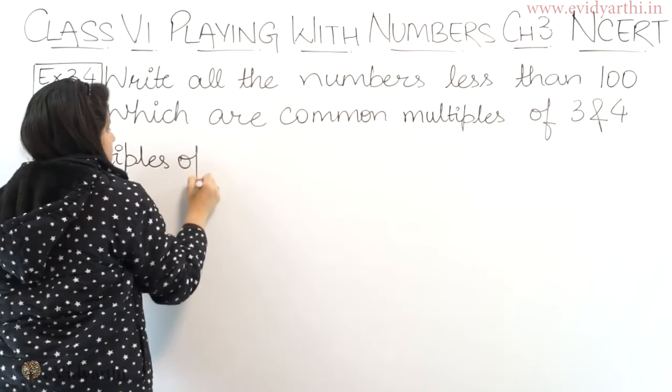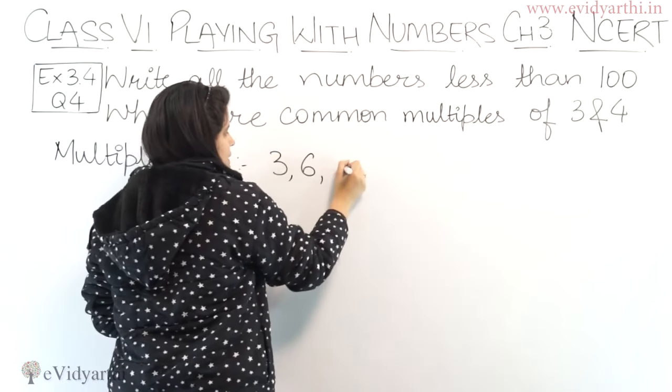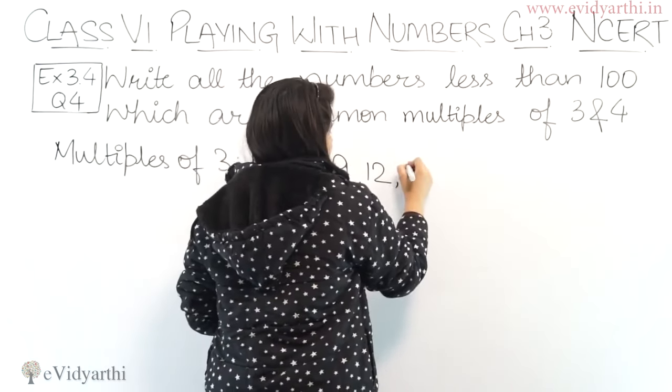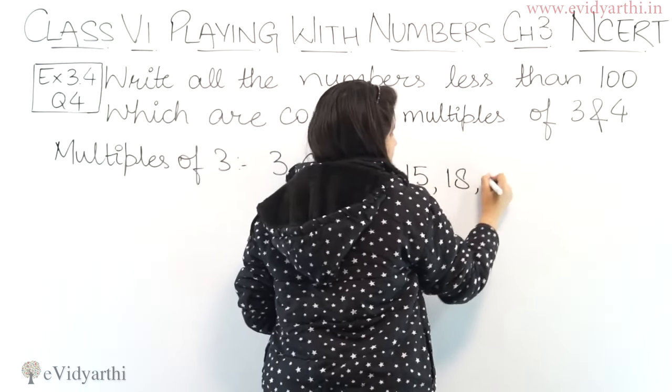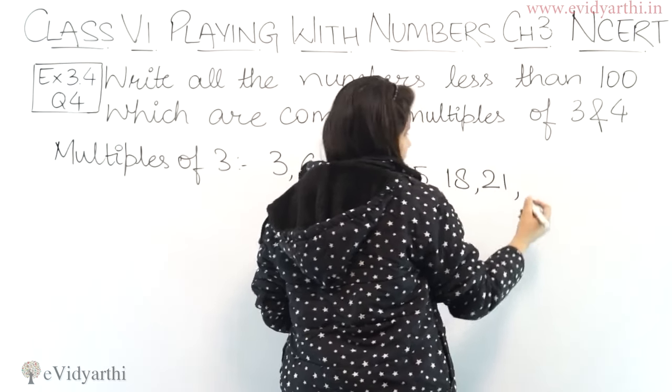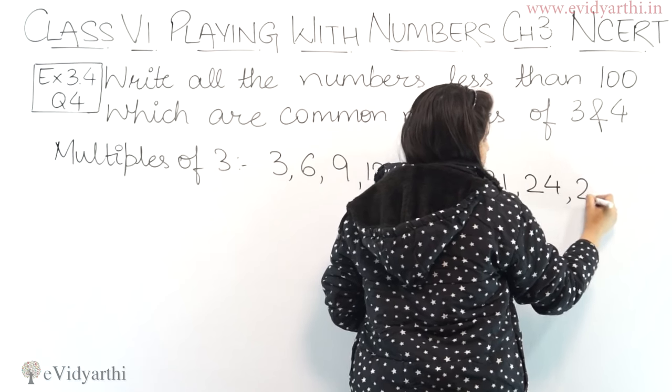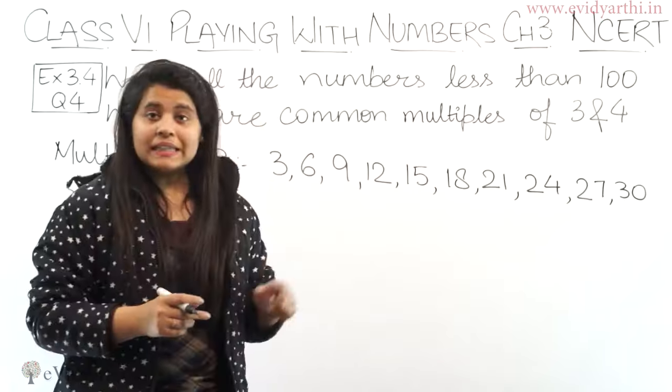So the multiples of 3 will be 3. 3 ones are 3, 3 twos are 6, 9, 3 fours are 12, 3 fives are 15, 3 sixes are 18, 3 sevens are 21, 3 eights are 24, 3 nines are 27, and 3 tens are 30. So this is the 3 table up to 30.